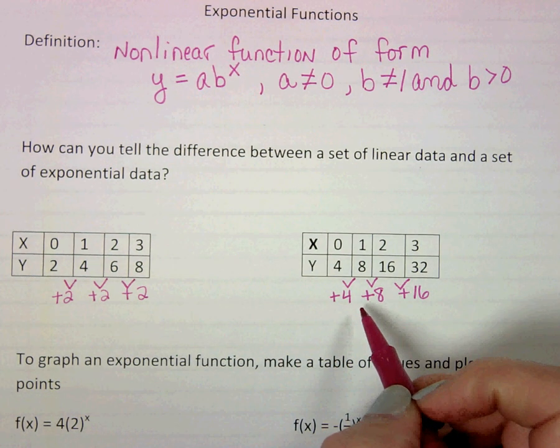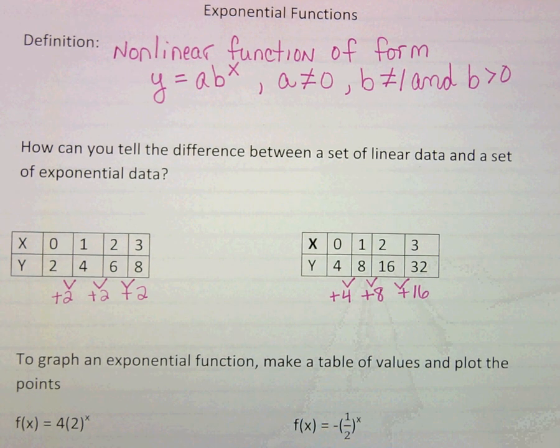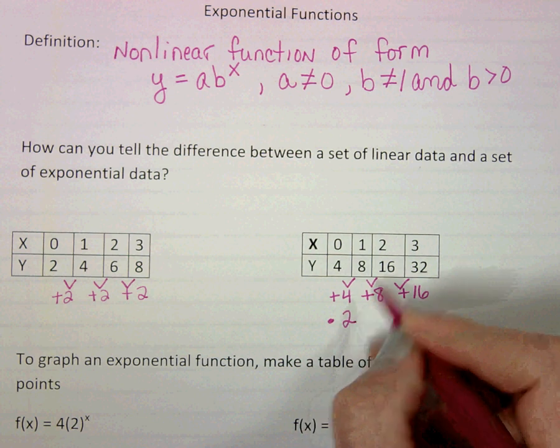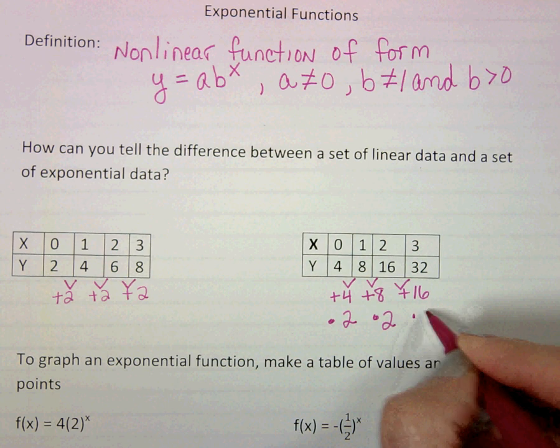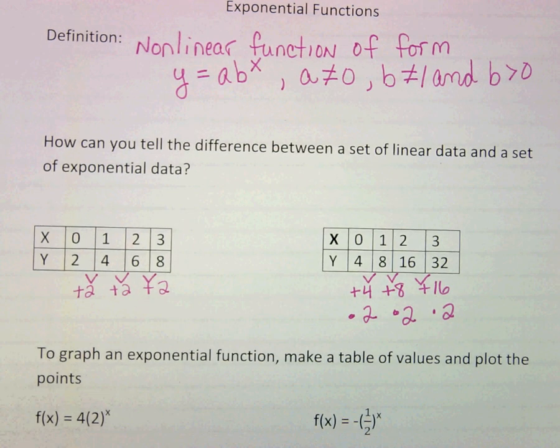So let's see if we can think about it a different way. Could I multiply 4 by something to get to 8? Sure, we could say times 2. 8 to 16, times 2. 16 to 32, times 2. So there's a very clear difference here in how we're identifying it.